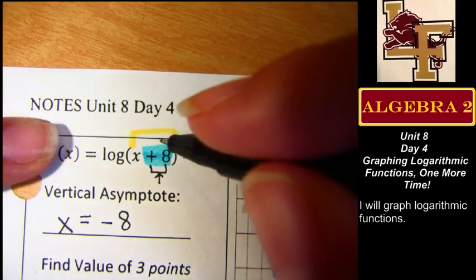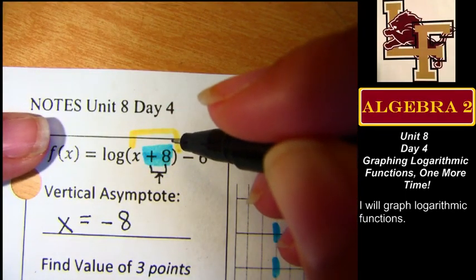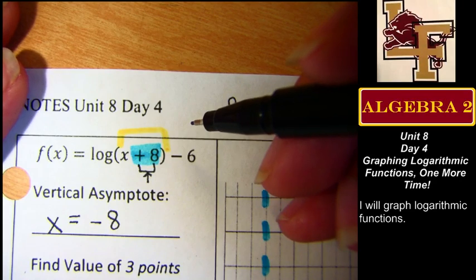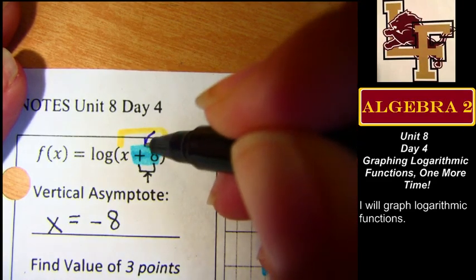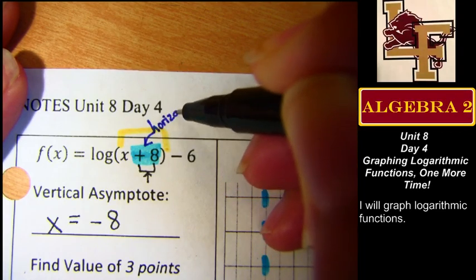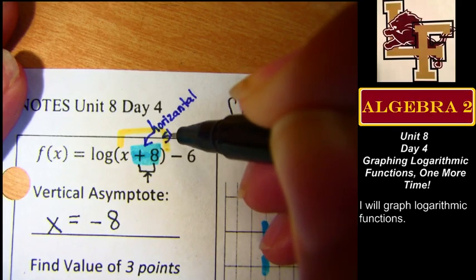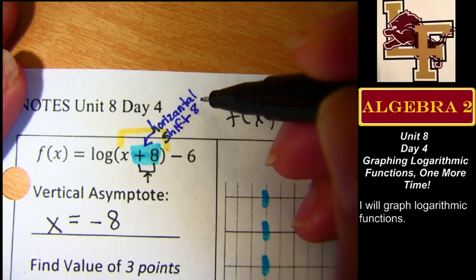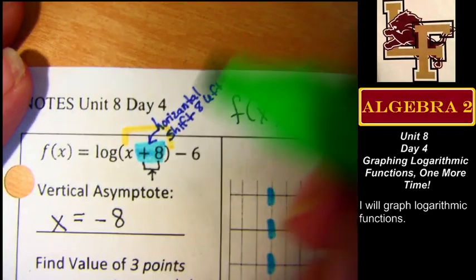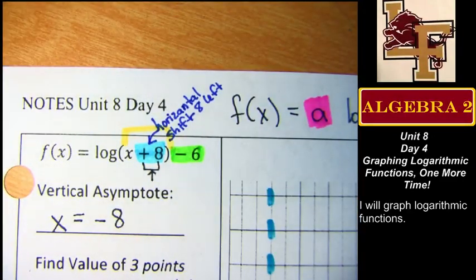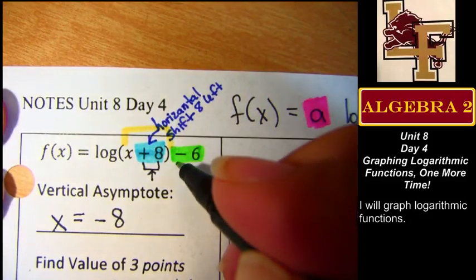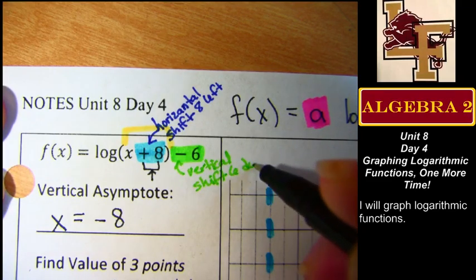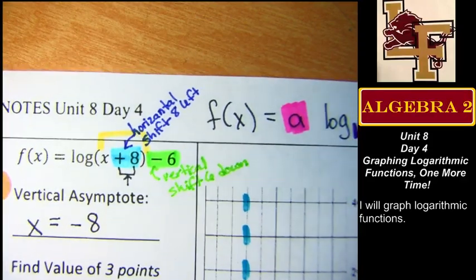All right. What kind of motion does this give me? The blue thing. What's happening? Horizontal. Horizontal? Horizontal what? Translation. Horizontal translation. I think I misspelled horizontal. Sorry. All right. Shift. Eight units to which direction? To the left. Left. All right. And then this thing? This is a vertical shift? All right. How many units? Down six. Down six. Thank you, miss. You're very welcome, miss.